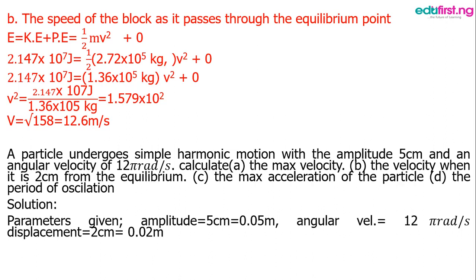The last example: a particle undergoes simple harmonic motion with an amplitude of 5 cm and angular velocity of 12 pi rad/s. Calculate the maximum velocity, the velocity when it is 2 cm from the equilibrium, the maximum acceleration, and the period of oscillation. We are given those parameters and convert the centimeter values back to meters.